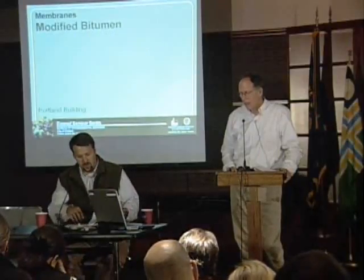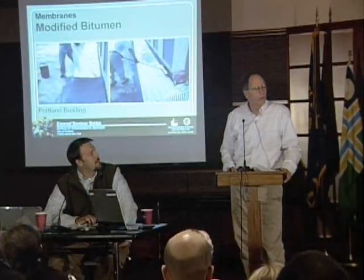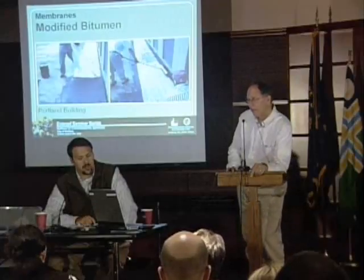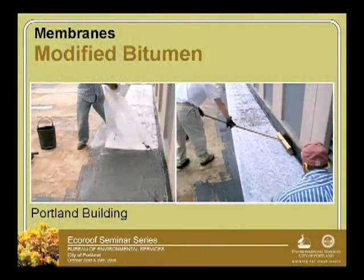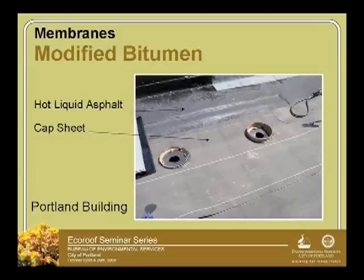A cap sheet is a roll-out material about three feet wide made of the same asphalt material. It's called a cap sheet because it has granular material impregnated into the top, which helps protect it from foot traffic, ultraviolet rays, and so on — it's a protective cap. We'll bring physical examples back after the break. Here you can see the fabric going on top of the first poured layer, making it waterproof.